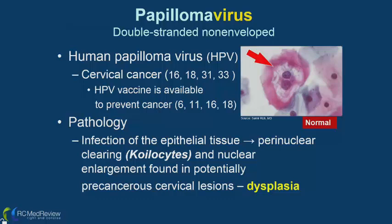The HPV vaccine covers strains 6, 11, 16, and 18. Even a vaccinated individual is not completely safe from cervical cancer because some strains are not covered. Infection of epithelial tissue with HPV produces abnormal cells with perinuclear clearing called koilocytes with nuclear enlargement — this is potentially pre-cancerous dysplasia of the cervical area.